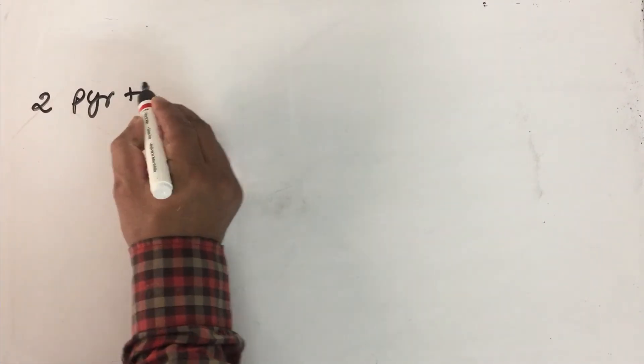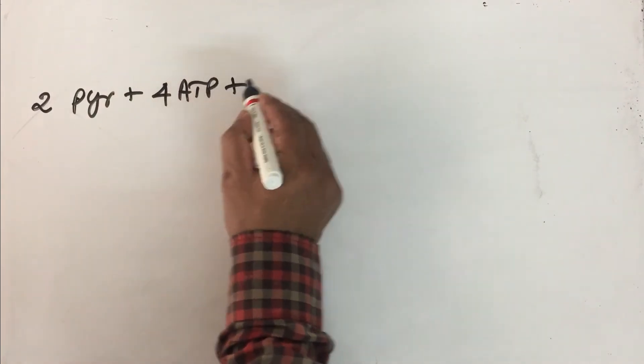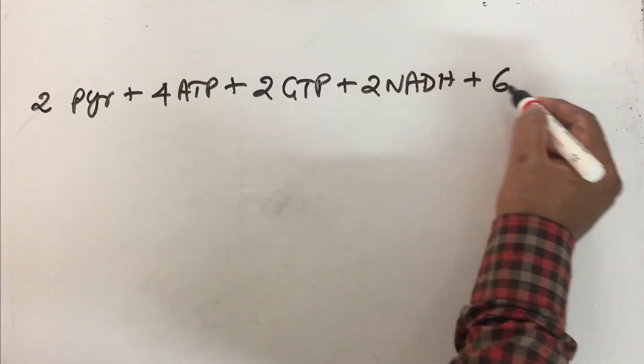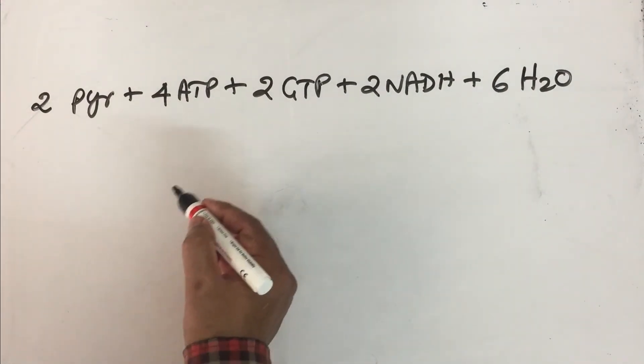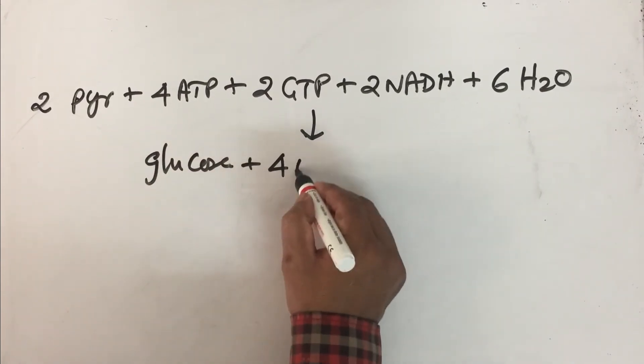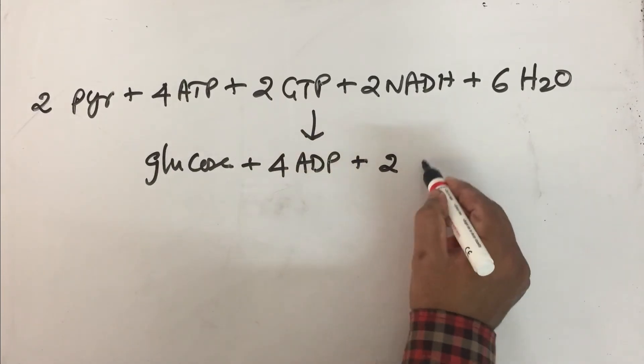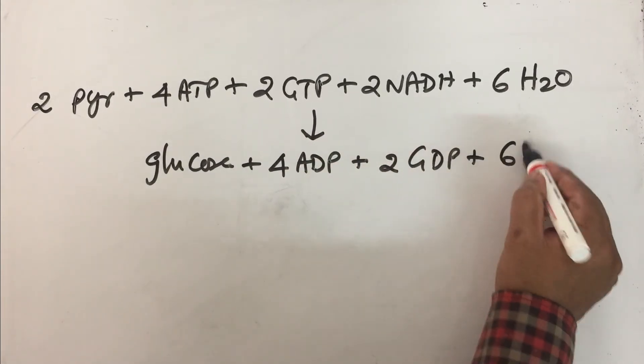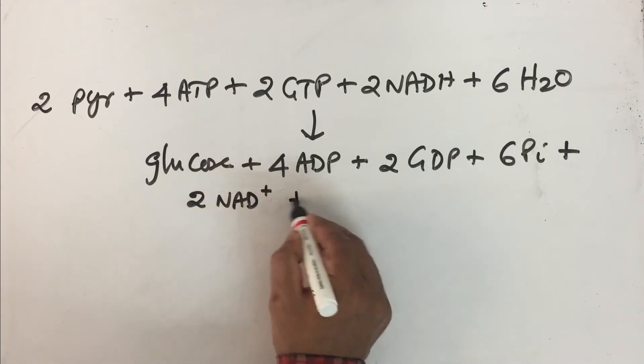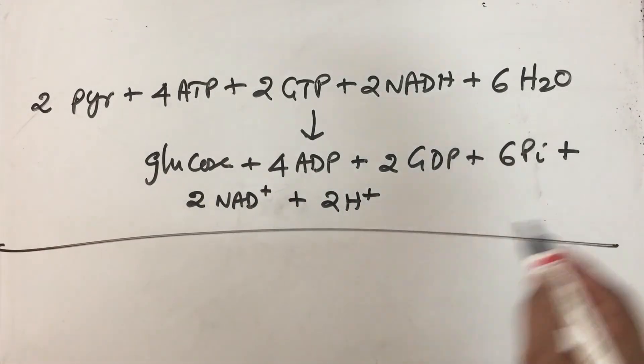The overall stoichiometry will be 2 pyruvate plus 4 ATP molecules plus 2 GTP molecules plus 2 NADH molecules plus 6 molecules of water. That will give 1 glucose molecule plus 4 ADP plus 2 GDP plus 6 inorganic phosphate and 2 NAD+ plus 2 H+. This is going to be the overall stoichiometry for gluconeogenesis.